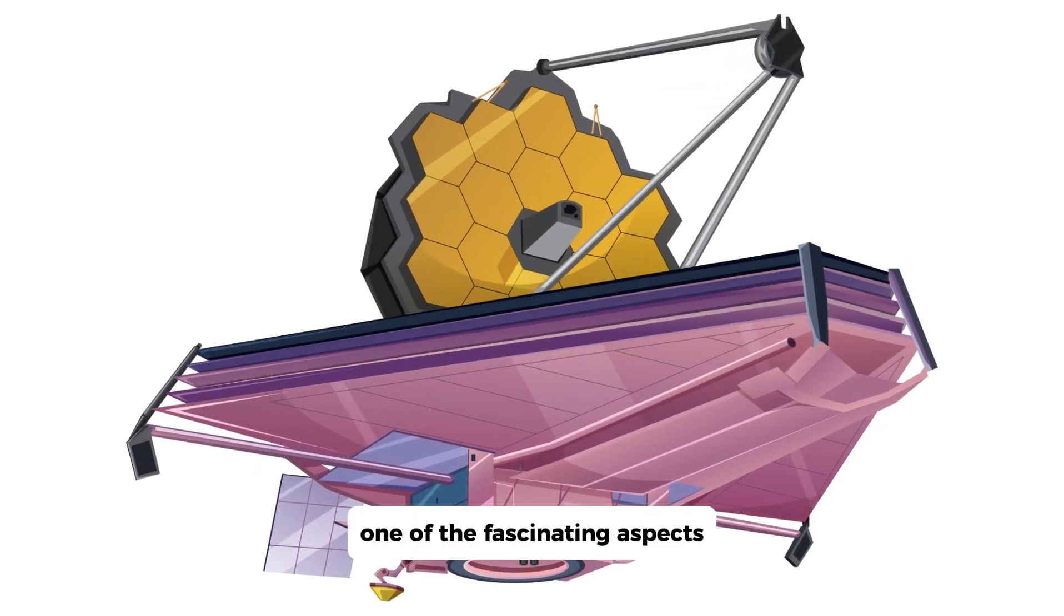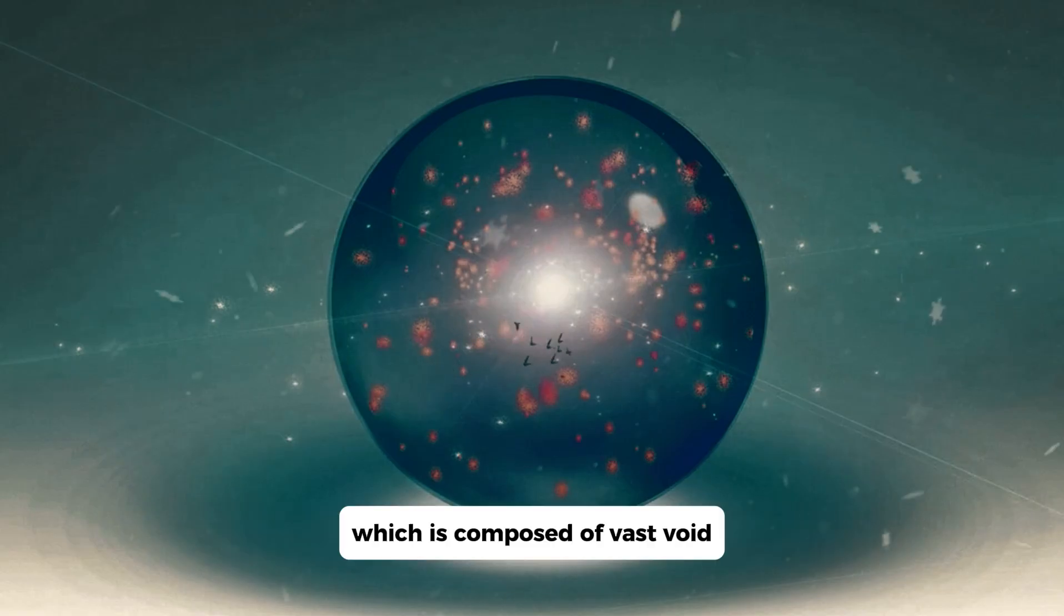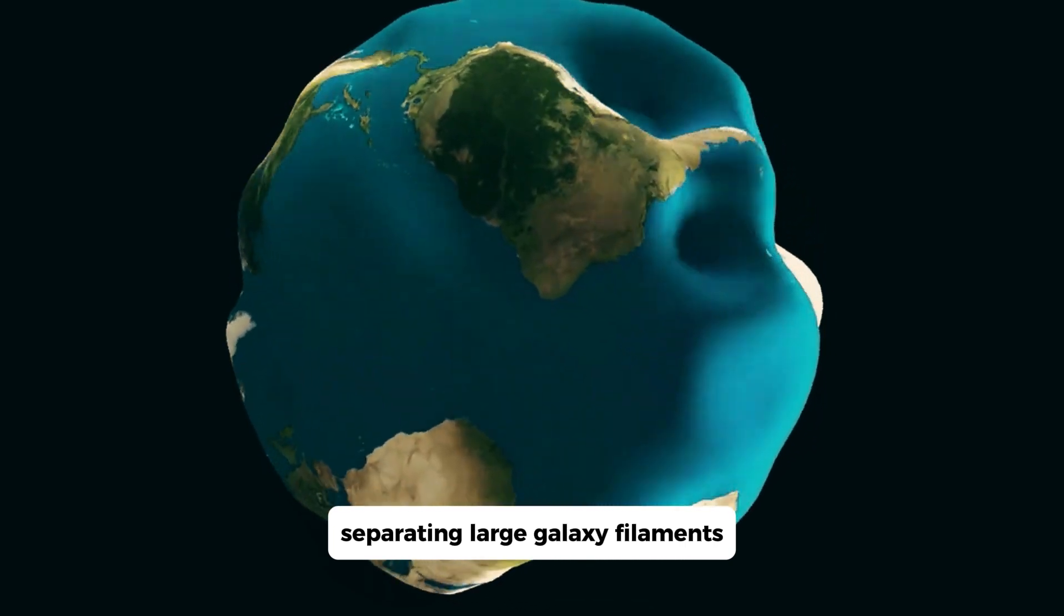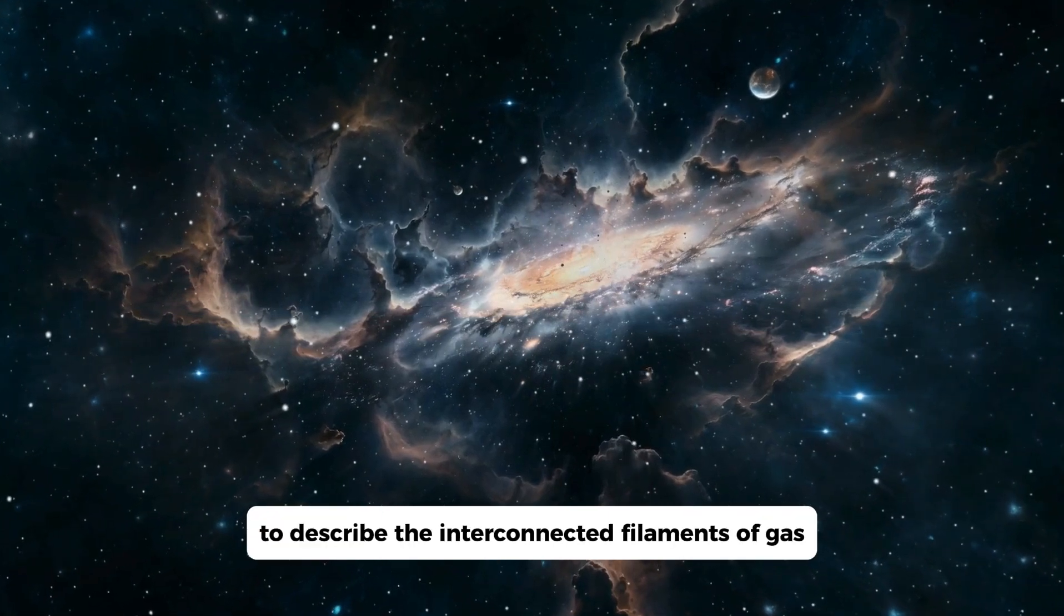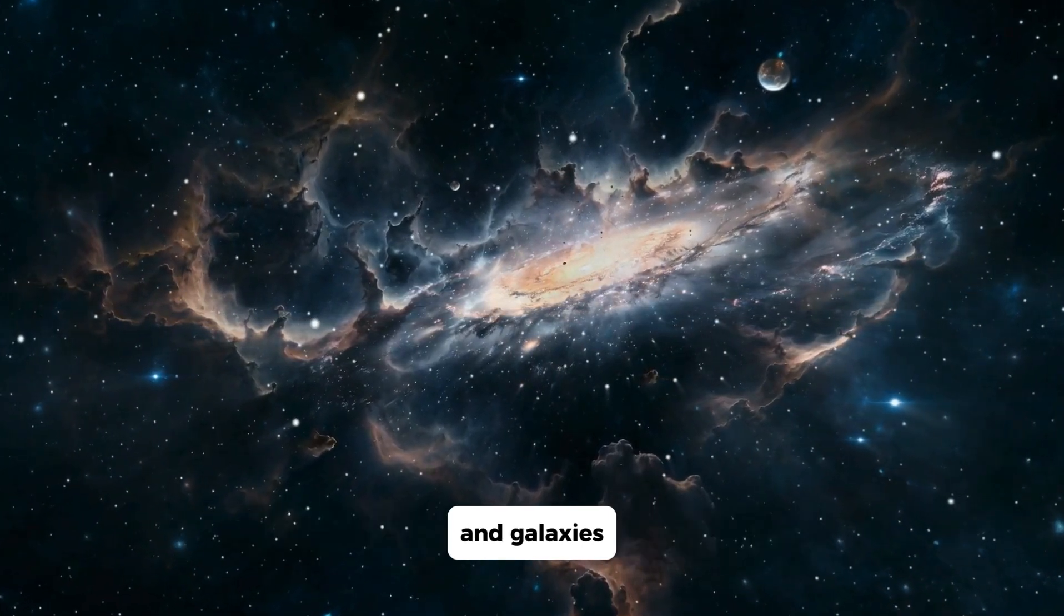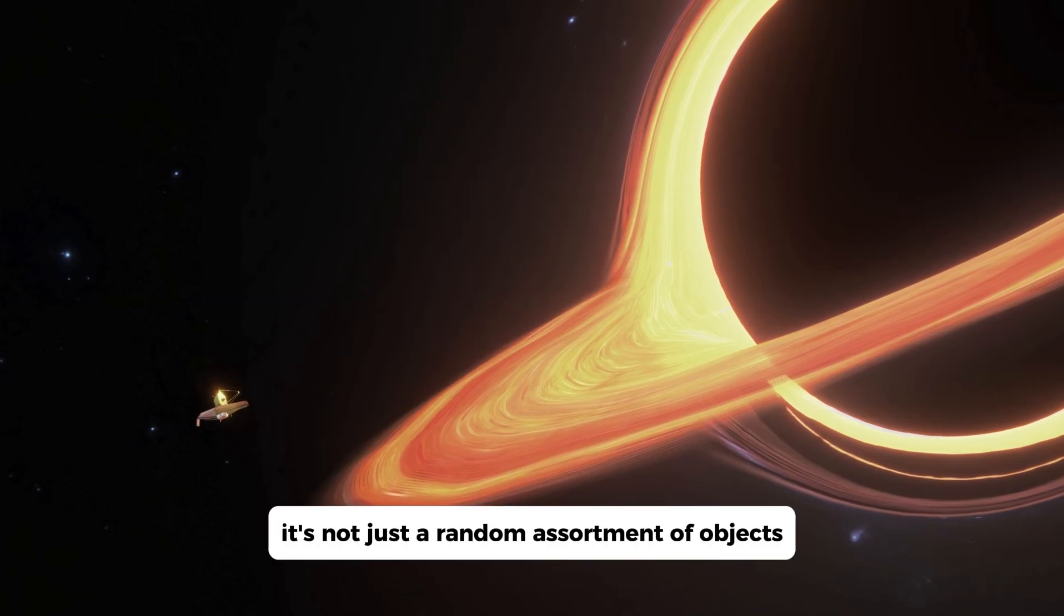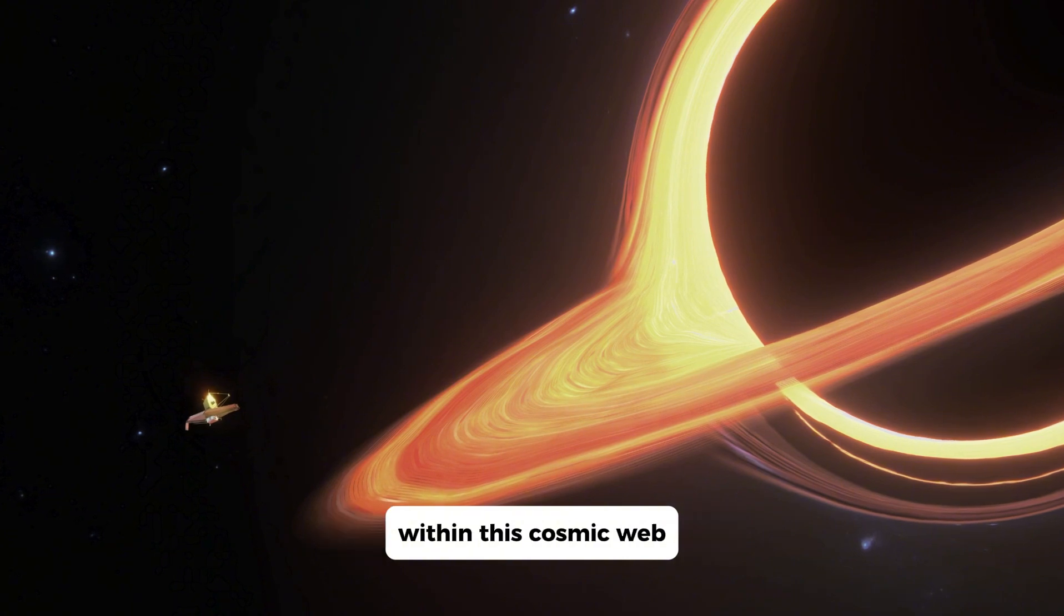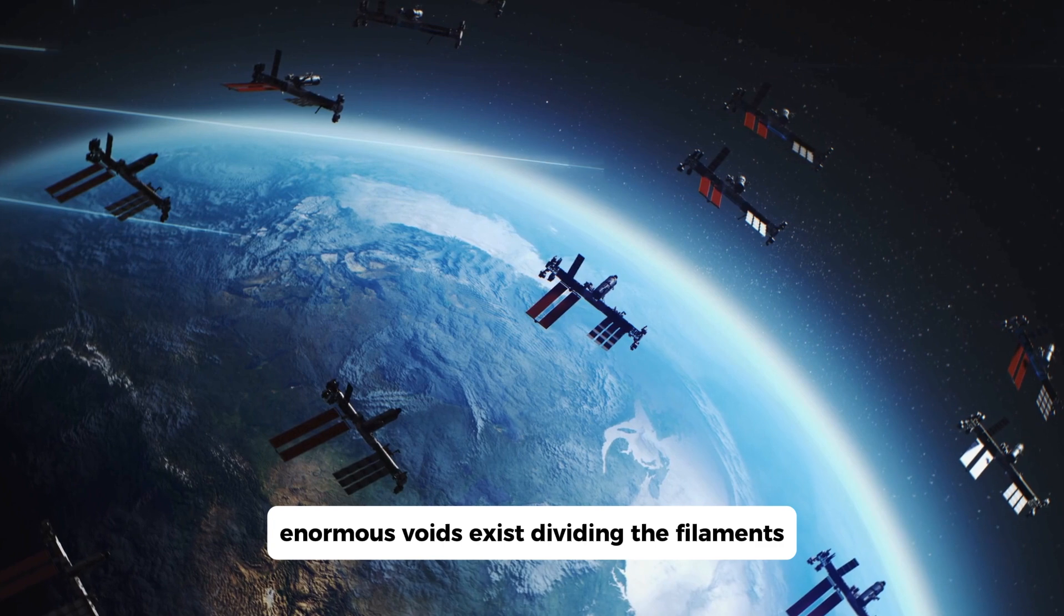One of the fascinating aspects JWST is uncovering is the structure of our universe, which is composed of vast voids separating large galaxy filaments. The term cosmic web is used by cosmologists to describe the interconnected filaments of gas and galaxies that make up the structure of the universe. It's not just a random assortment of objects, but a well-organized arrangement. Within this cosmic web, enormous voids exist, dividing the filaments.